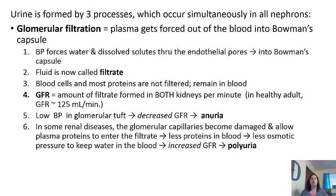The glomerular filtration rate, or GFR, is the amount of filtrate formed in both kidneys per minute. In a healthy adult, this is about 125 milliliters per minute. Low blood pressure decreases the glomerular filtrate, reducing urine production — this is called oliguria. In some renal diseases, glomerular capillaries can become damaged, allowing plasma proteins to enter the filtrate. With less protein in the blood, there's less osmotic pressure to keep water in the blood, which can abnormally increase the filtration rate, causing polyuria — producing too much urine.